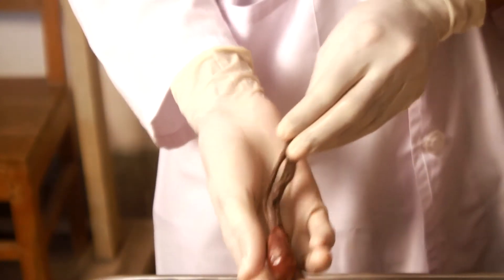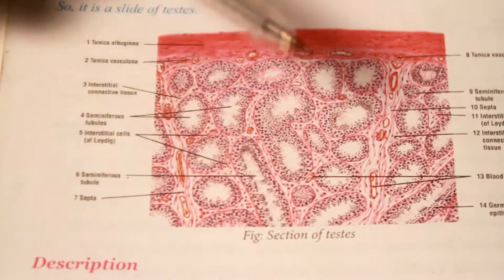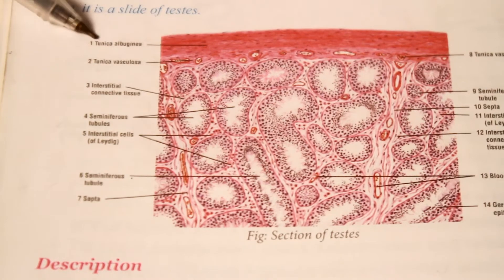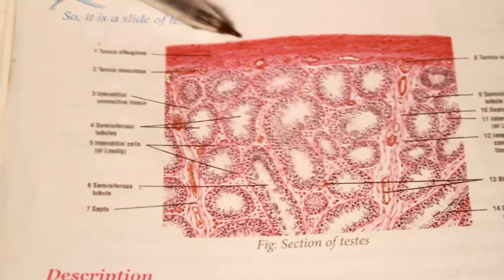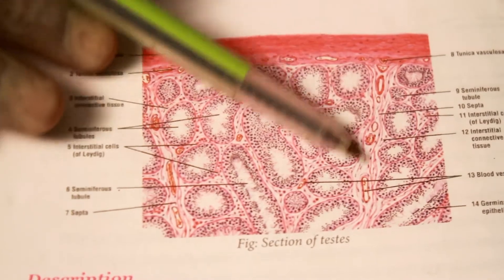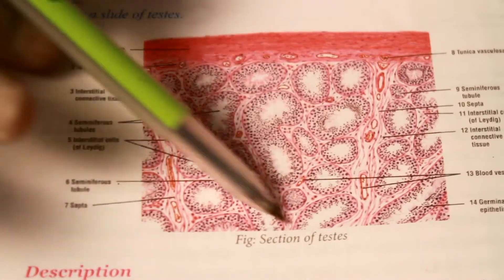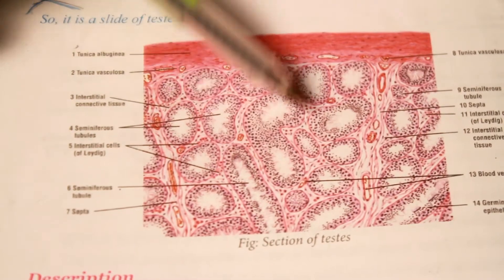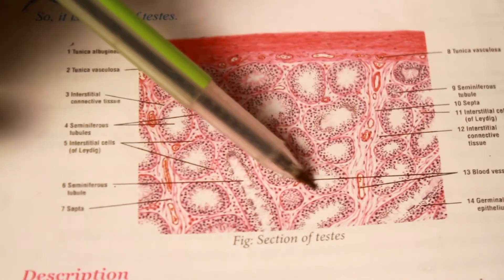Now come to the structure of testis. The figure describes the histological structure of the testis. In histological structure we see 3 layers of testis from outside inward: the visceral layer of tunica vaginalis, then tunica albuginea. From tunica albuginea, various septa protrude into the interior of the testis and divide it into lobules. Each lobule contains 1 to 4 seminiferous tubules.